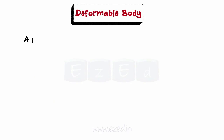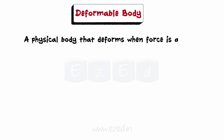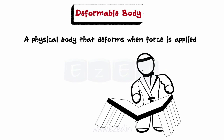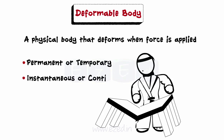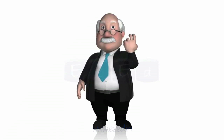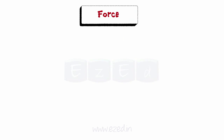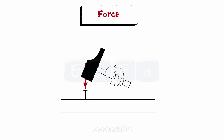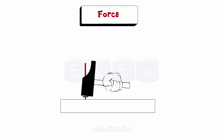A deformable body is a physical body that deforms, meaning it changes its shape or volume while being acted upon by an external force. For example, if a table is punched by a karate teacher, it will be shred into pieces, thus showing deformation. Deformation may be brought about in a number of ways — namely permanent or temporary, instantaneous or continuous. A force is an action of one body on another body. A force is exerted only when there is an actual contact between the two bodies — for example, a man hitting a nail with a hammer.